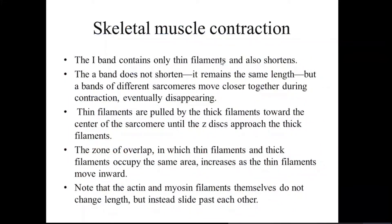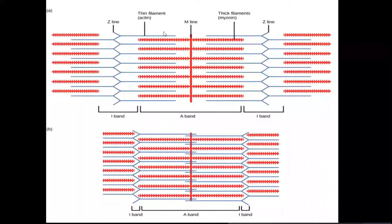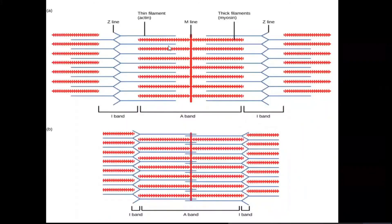When the I-band contracts, the overlapping of thick and thin filaments increases. It is important to note that actin and myosin filaments themselves do not change their length — instead, they slide past each other. This overall mechanism of muscle contraction involves the sarcomere as the functional unit, spanning from one Z-line to another Z-line, where overlapping of thick and thin filaments drives contraction.